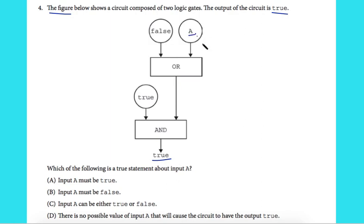Input A is here. The choices are: Input A must be true, Input A must be false, Input A can be either true or false, or there is no possible value of input A that will cause the circuit to have the output true.